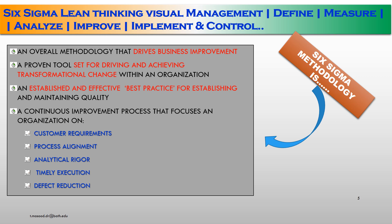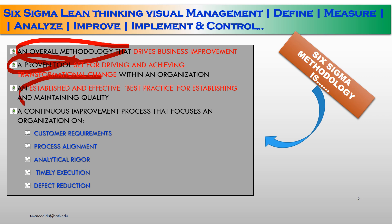Six Sigma methodology is overall a method that drives business improvement. First, a proven rule set for driving and achieving results within any organization. Number 2, an established and effective best practices to establish and maintain quality. Number 4, a continuous improvement process that focuses an organization on customer requirements, process alignment, analytical rigor, timely execution, and defect reduction or defect elimination. That is what Six Sigma methodology is.